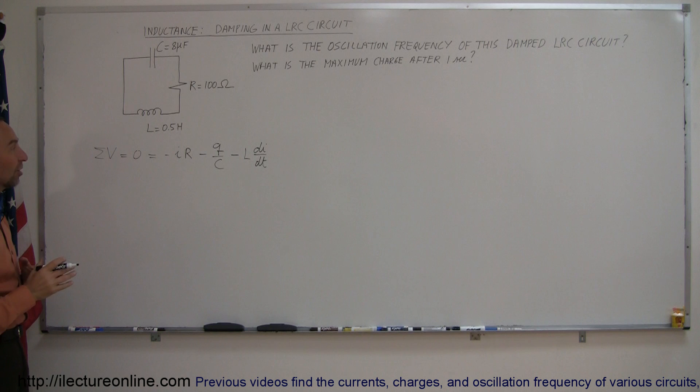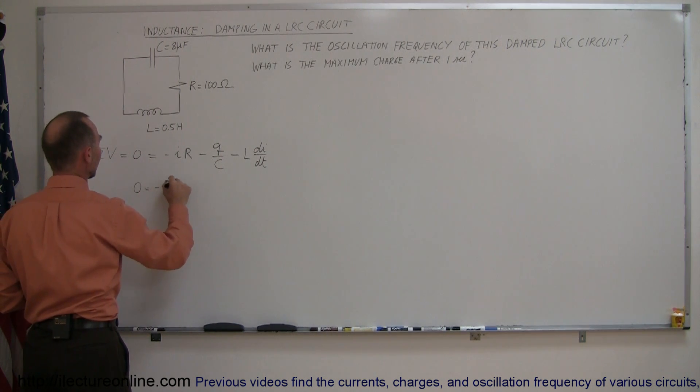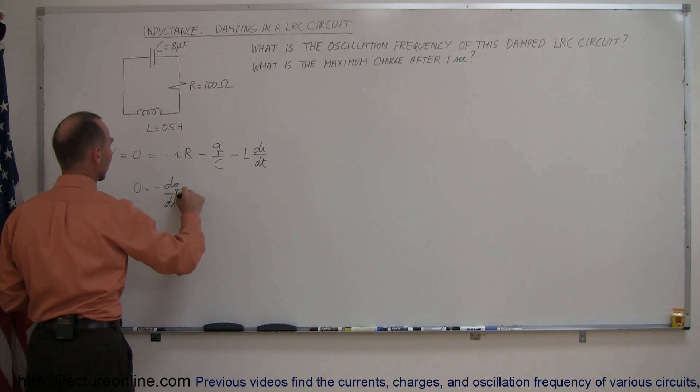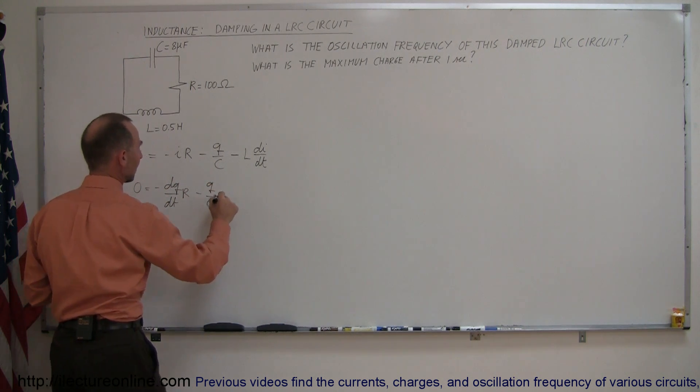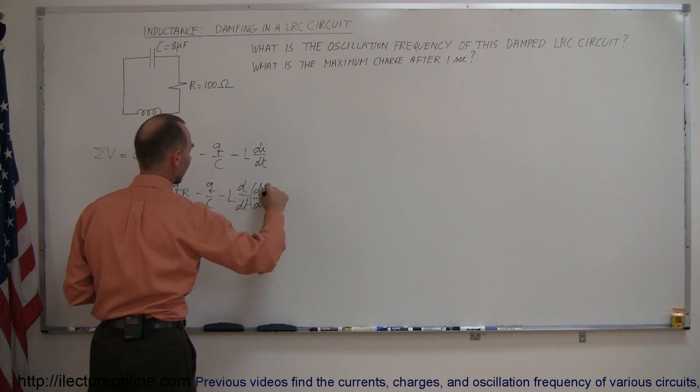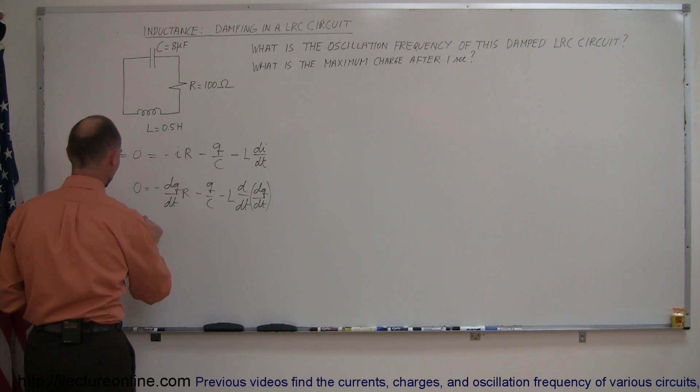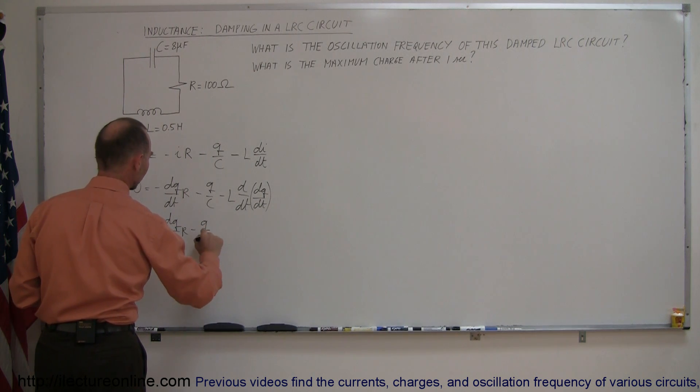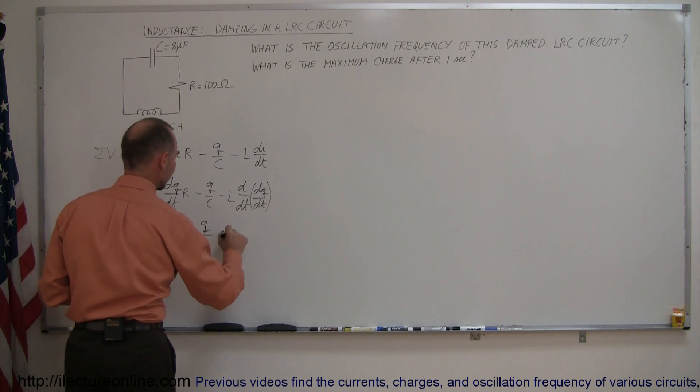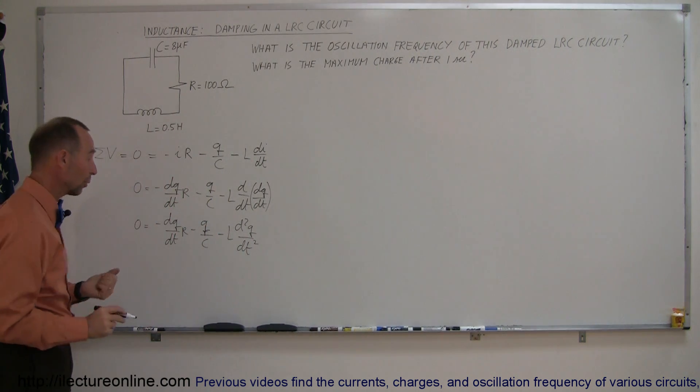Okay now since we know that I is equal to dQ/dt we could replace the I here and the I there by dQ/dt so we say that zero is equal to minus dQ/dt times R minus Q over C and minus L times d²Q/dt². Notice then, this is a Q and minus L times d²Q/dt² and again that looks like a differential equation of the variable Q.